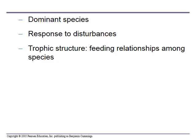We're going to look at dominant species, which are going to be sort of your top predators. We'll look at response to disturbances — called succession — after a major disturbance like a fire or a volcano, how things come back. And then trophic structure: the feeding relationships among species. The highest predator will be at the top as the highest consumer, with consumers below that and producers at the bottom.